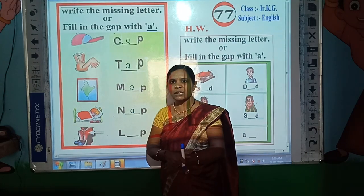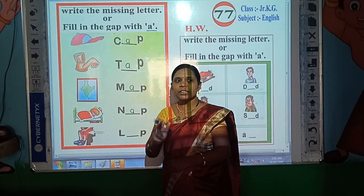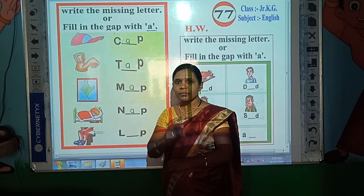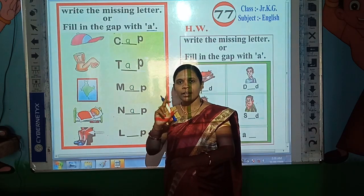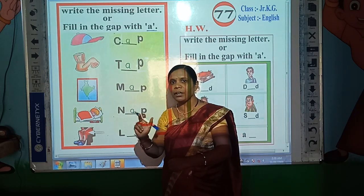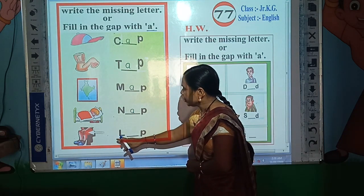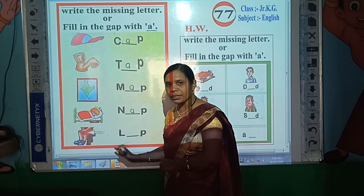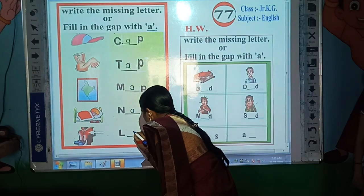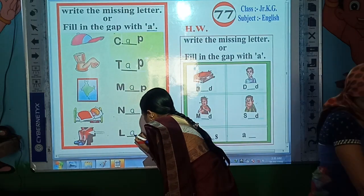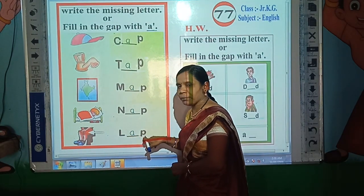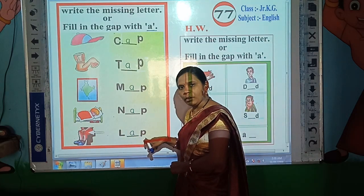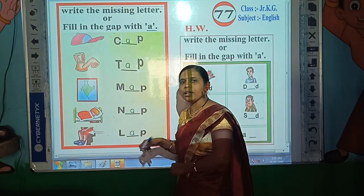Now look here — which picture is this? Correct. This is the picture of lap. Now read the spelling of lap: L-A-P, lap. Now look here: L-P. Here also, A is the missing letter, so write A here. L-A-P, lap.